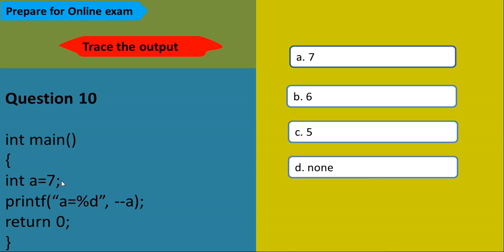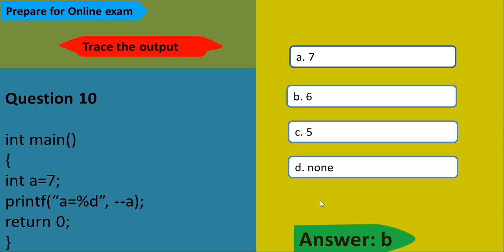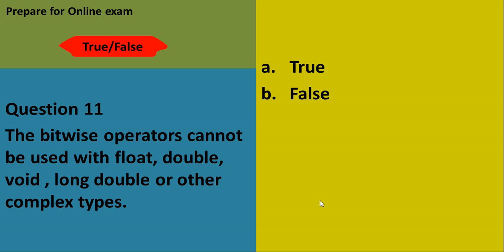Next question: In the main function, A equals 7, and then A is assigned the value of pre-decrement (--A). With pre-decrement, the decrement is performed first: 7 minus 1 equals 6. Then we get the output as 6.